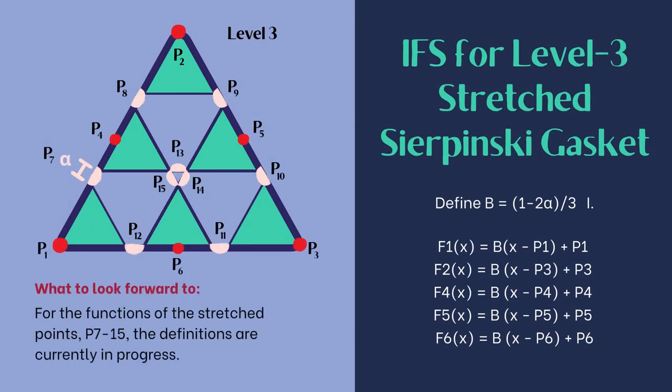The IFS for Level 3 Sierpinski Gasket. As mentioned before, the intersections between the internal triangles are stretched into line segments, so we will assign that length as alpha. We currently found 6 functions for our IFS. So what we will look forward to are the stretch points 0.7 to 0.15.